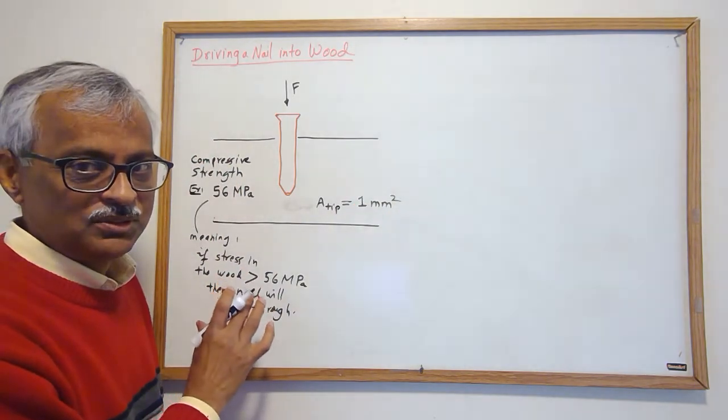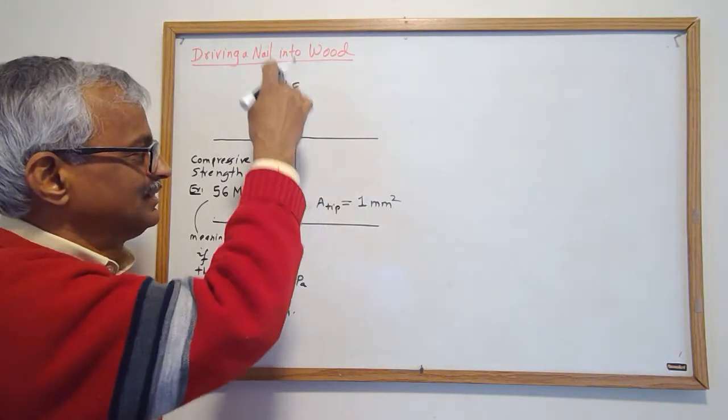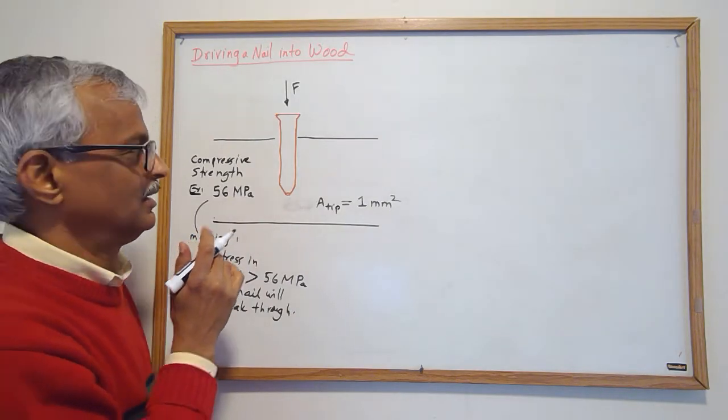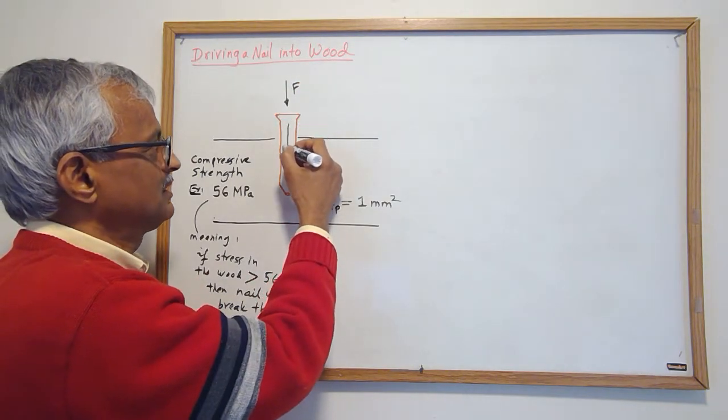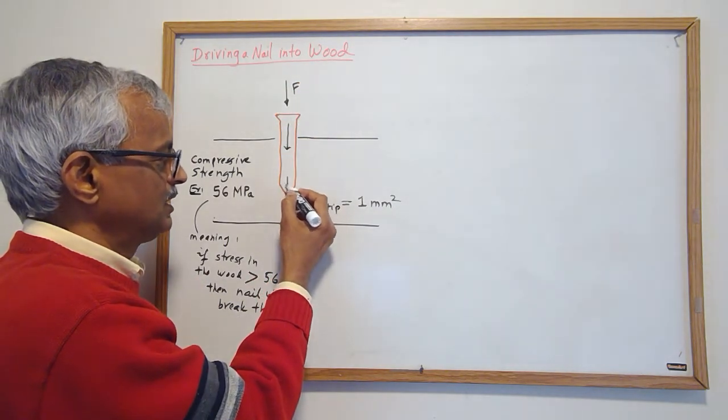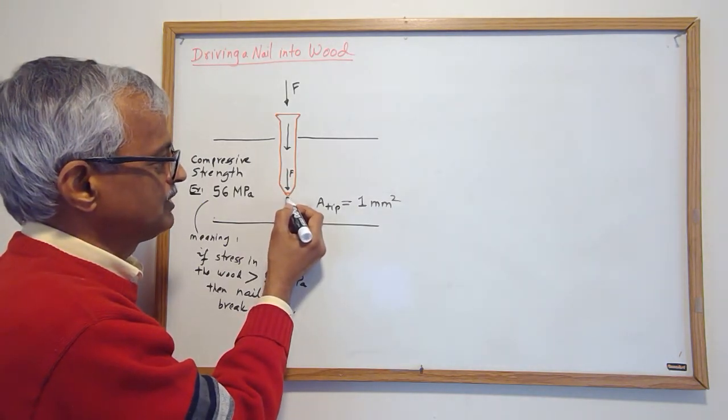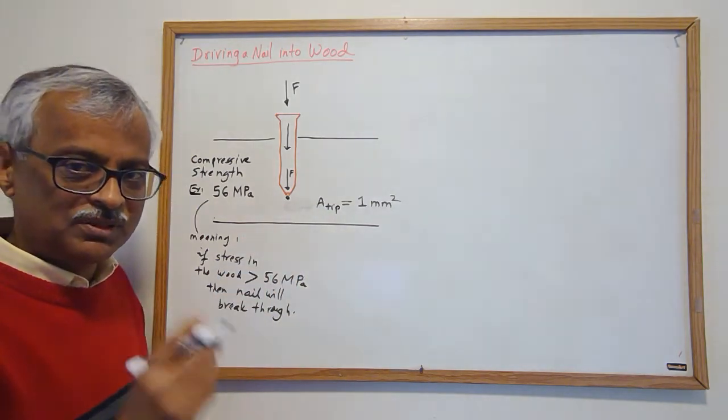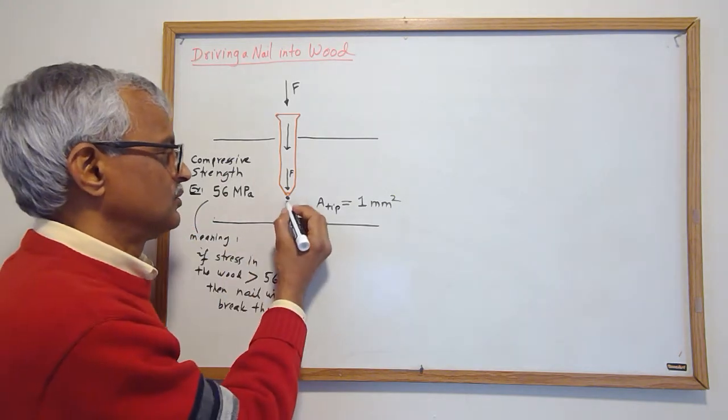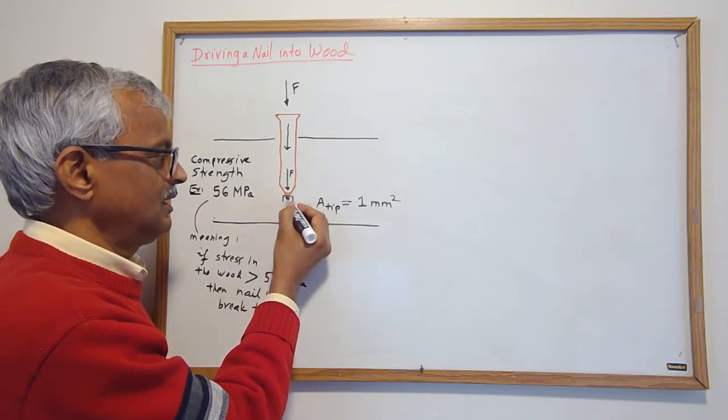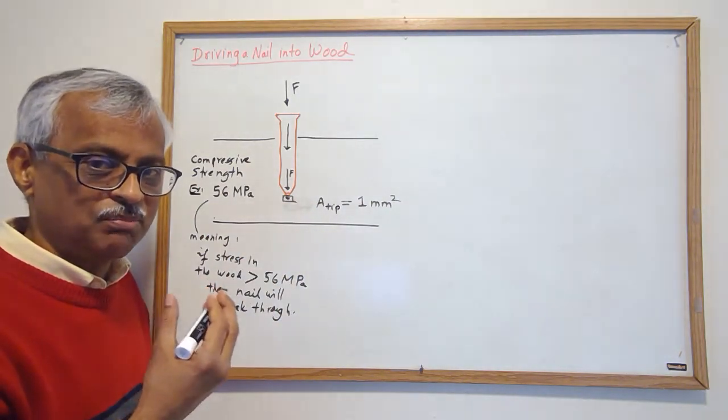So I want to figure out what kind of force I need so that the nail will go through. One way of thinking is this force will be the same force that will come all the way down here. If I look at this piece of the wood just standing in front of the tip, you can see this thing has force balanced on it.